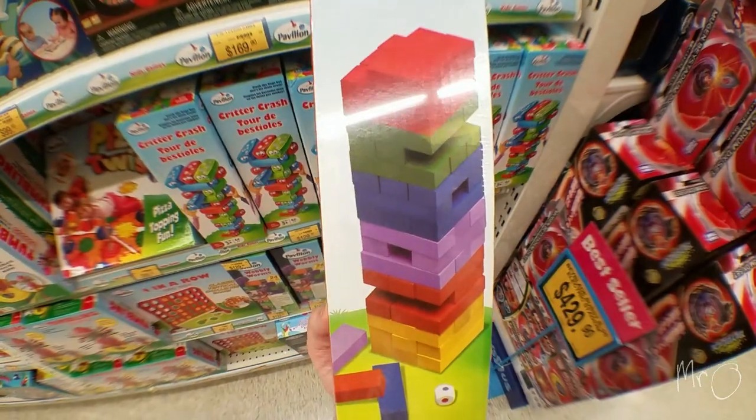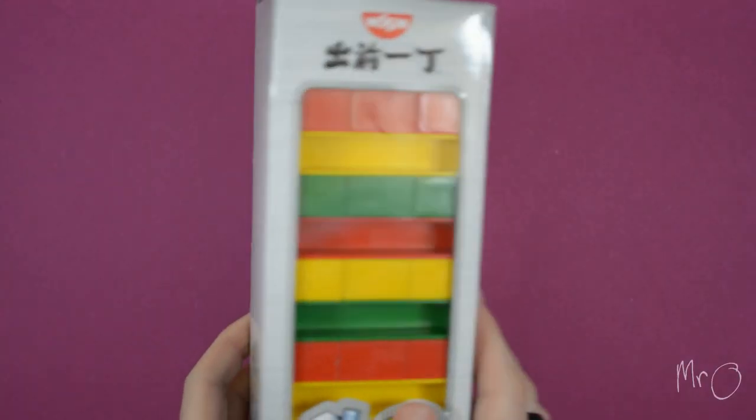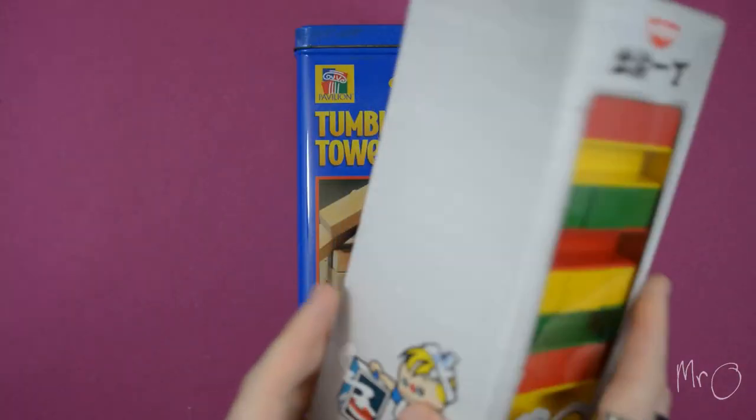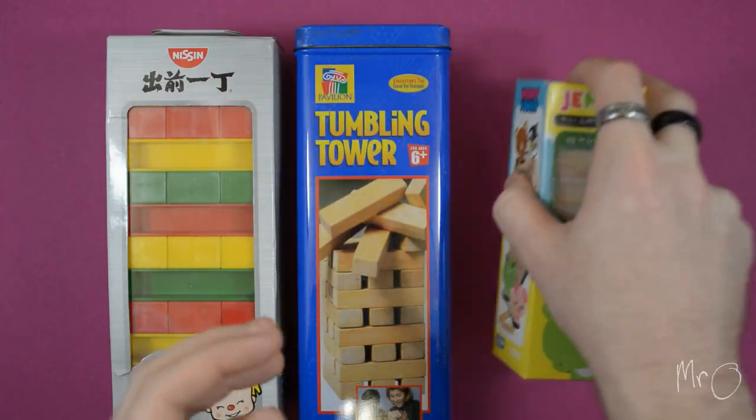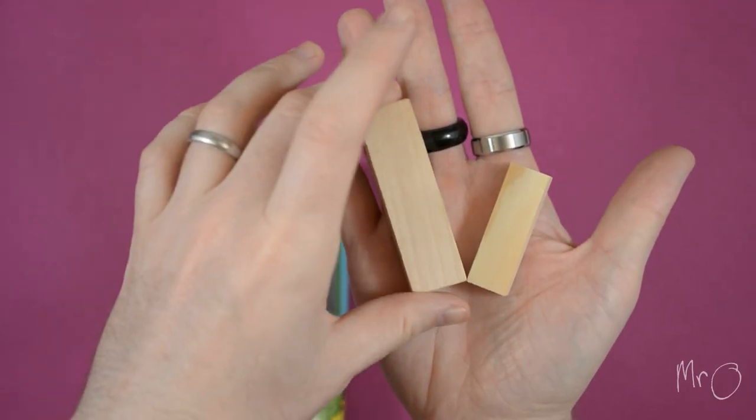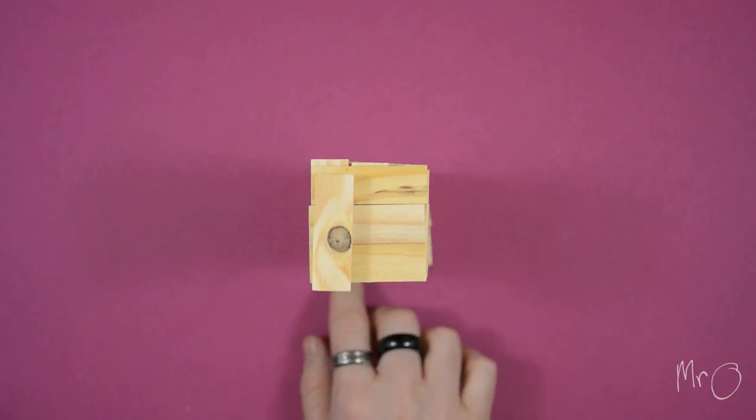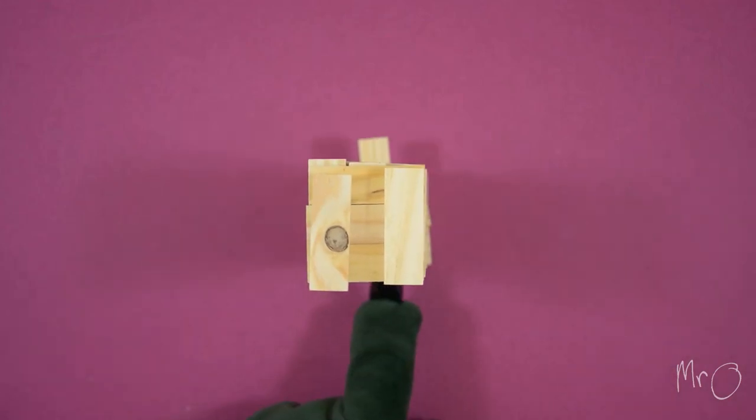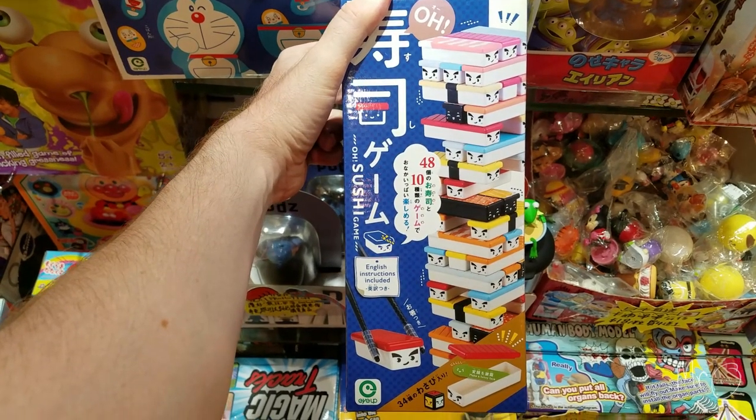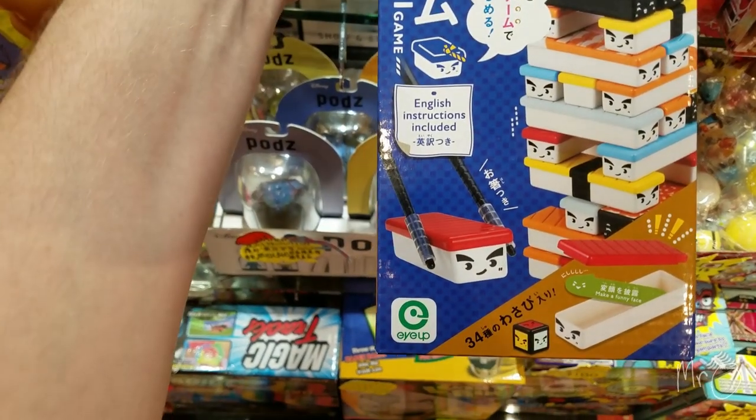And at home I have Tumbling Tower. This one, from the Nissin Noodle Makers. This tiny little one, but it's quite difficult. Oh, and I found this sushi version, which is weird.